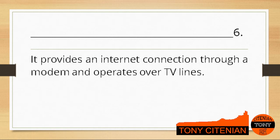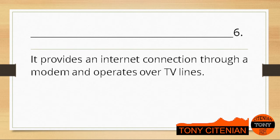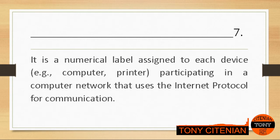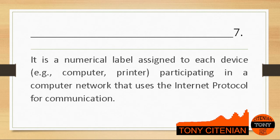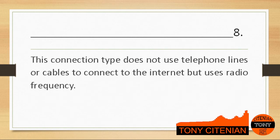It provides an internet connection through a modem and operates over TV lines. Number 7. It is a numerical label assigned to each device, such as computer and printer, participating in a computer network that uses the internet protocol for communication.